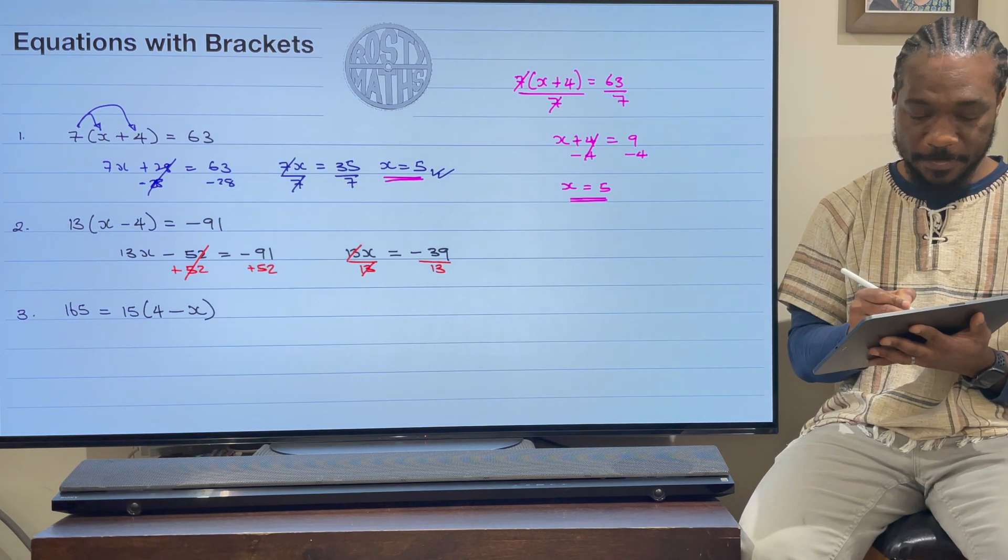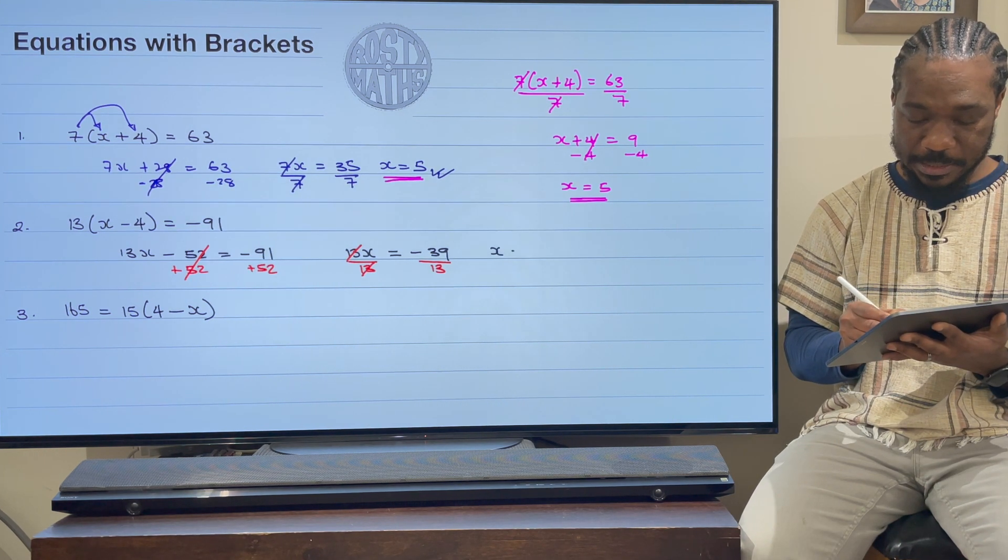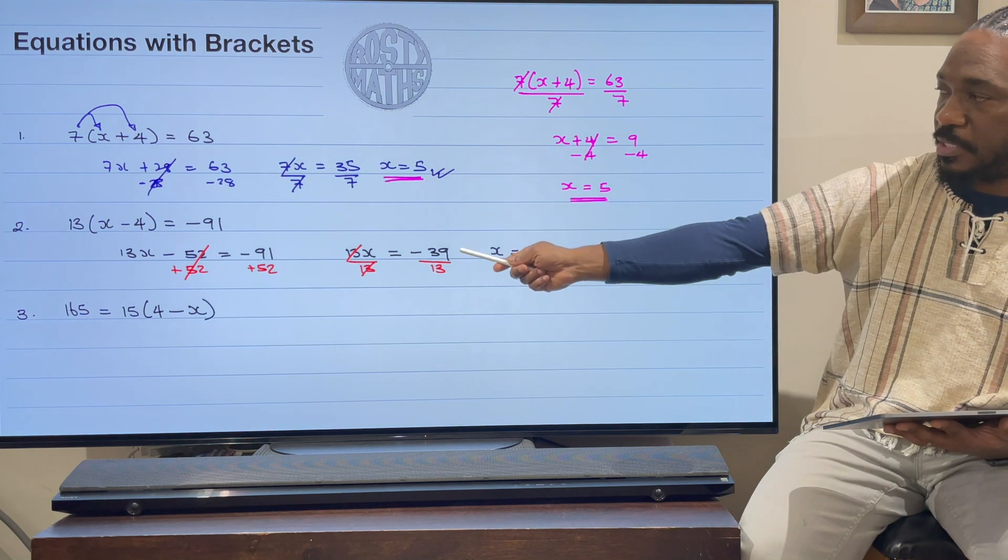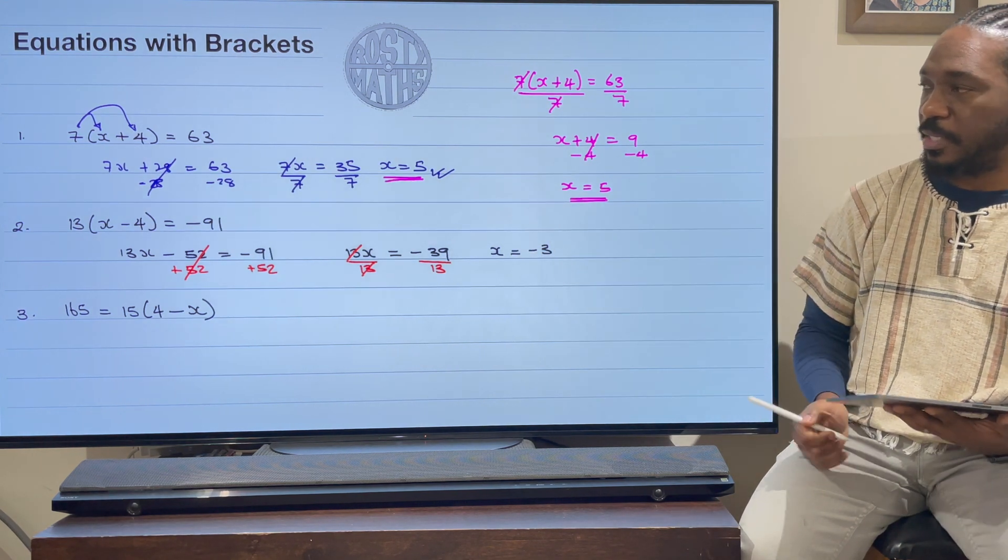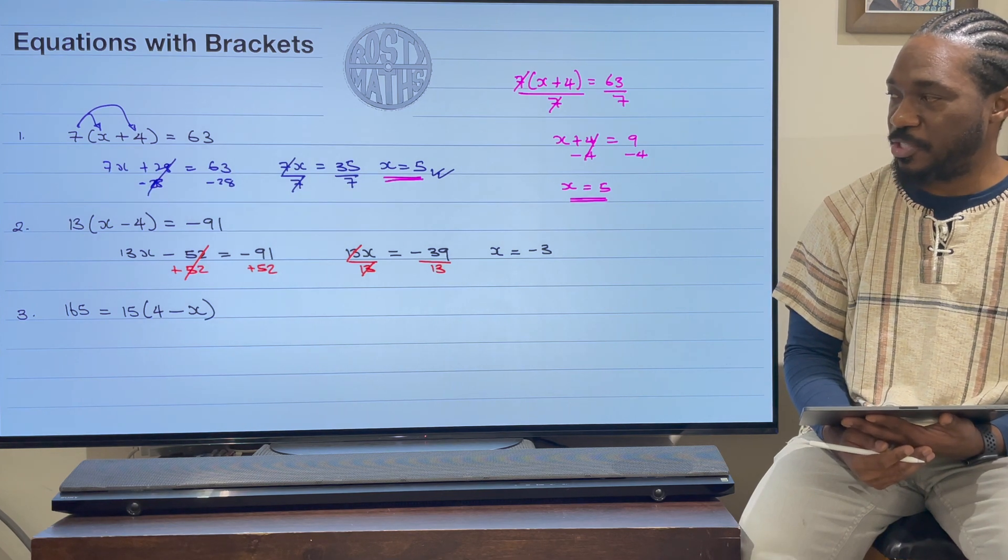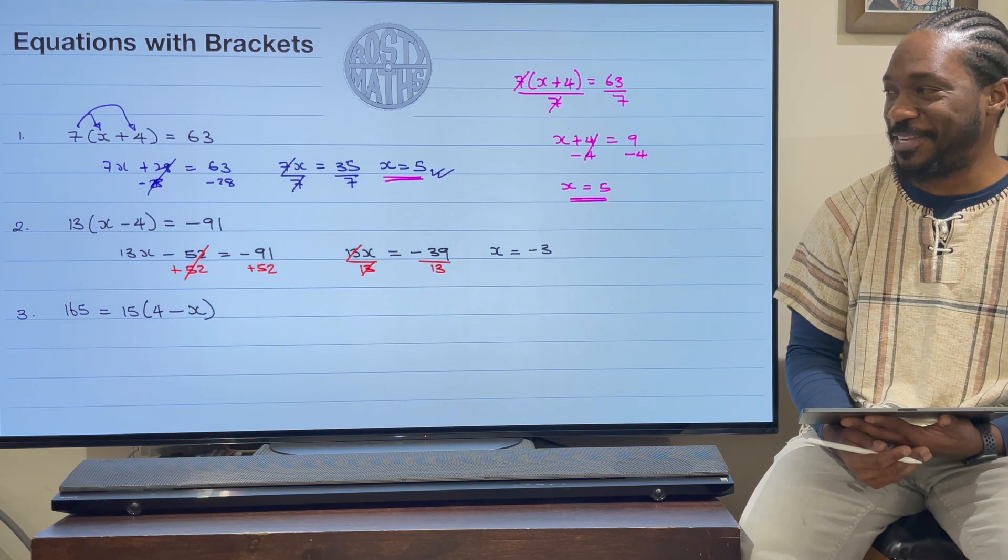My 13s will cancel out here, leaving me with x is equal to -3, because 39 divided by 13 is -3. And just like that, that is finished.